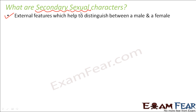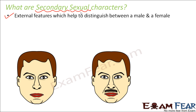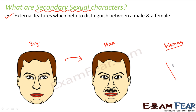One example of secondary sexual characters is the appearance of a moustache. If you look at a boy and a man, there is appearance of a moustache, which shows that the person has entered into his reproductive phase. Appearance of a moustache is present in a man but not in a woman. So the presence or absence of a moustache helps you to distinguish between a male and a female. This is one example of a secondary sexual character.